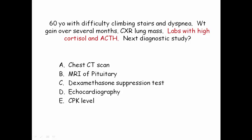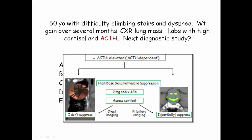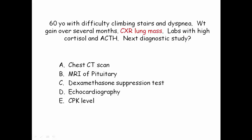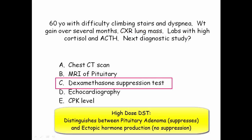The next question gives high cortisol and elevated ACTH values. The rule of thumb is functional assessment prior to imaging. This is an ACTH-dependent vignette, so the next step to determine suppression is the high-dose dexamethasone suppression test, which distinguishes between ectopic ACTH production and pituitary adenoma. A lung mass may suggest ectopic production from a small cell tumor, but this doesn't exclude concurrent Cushing's disease, and the mass may be incidental.